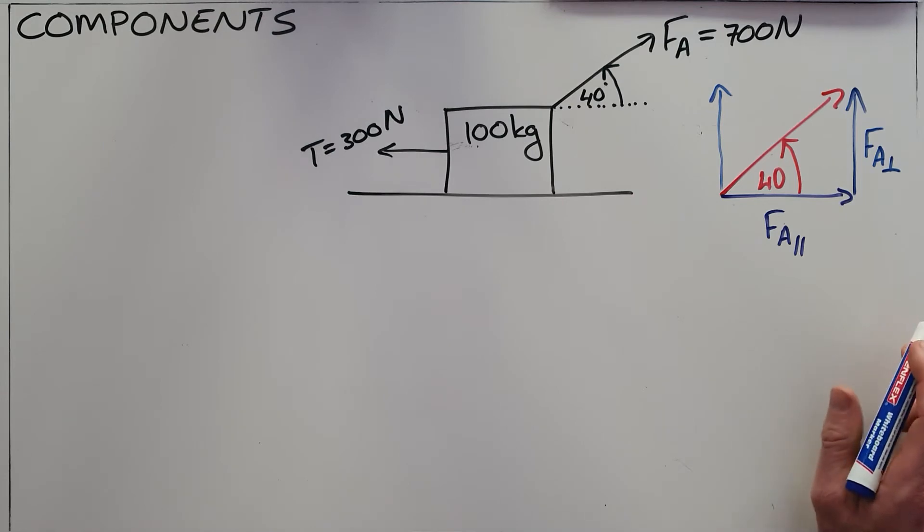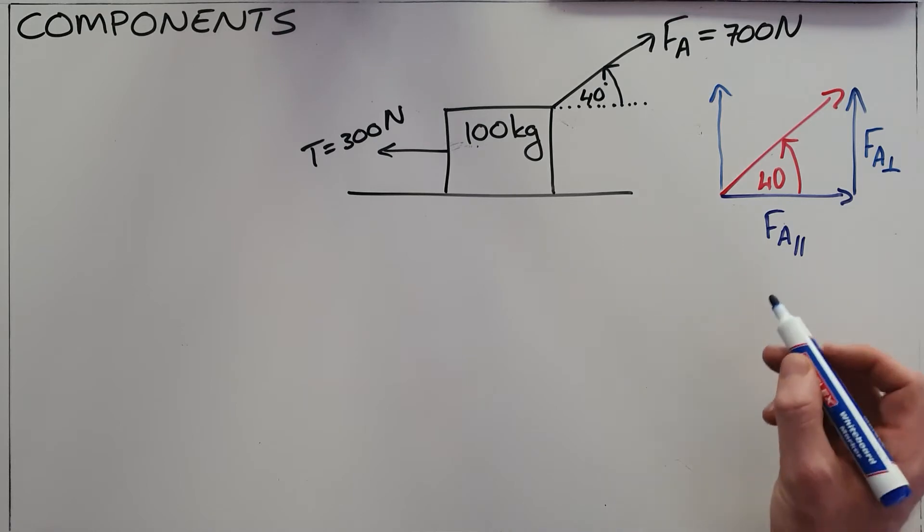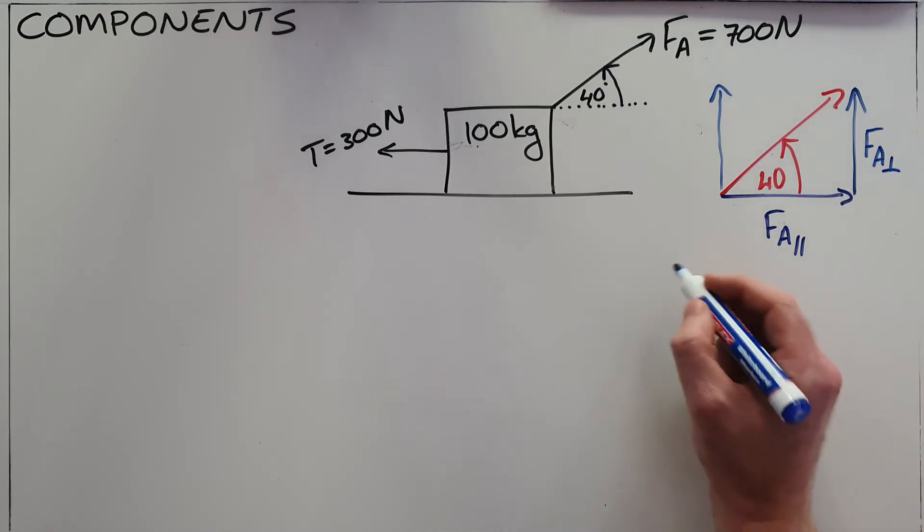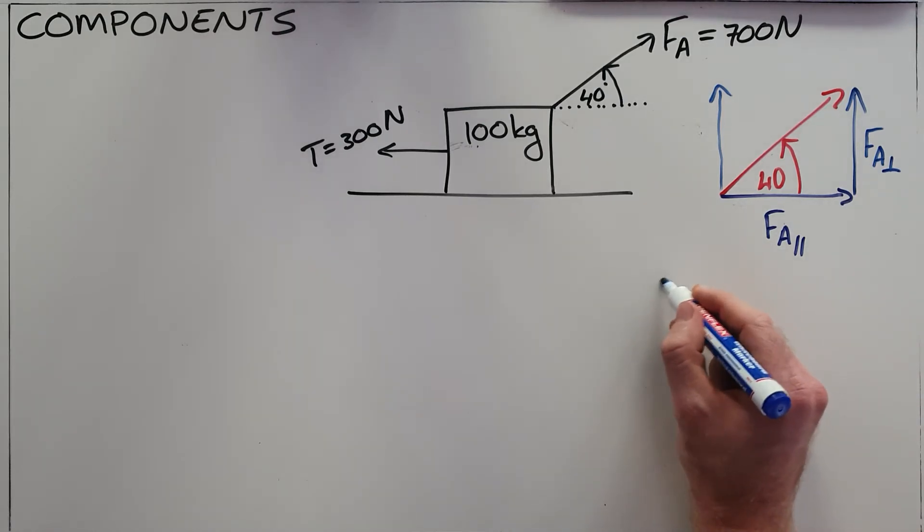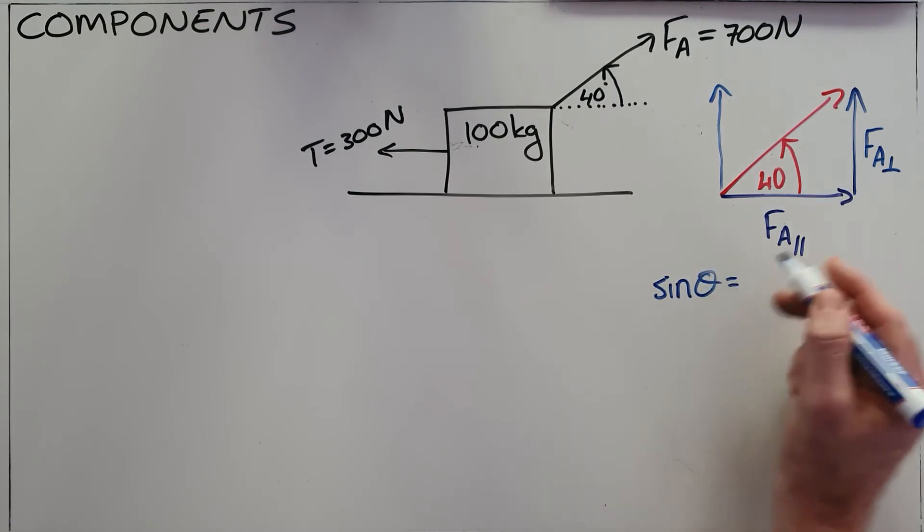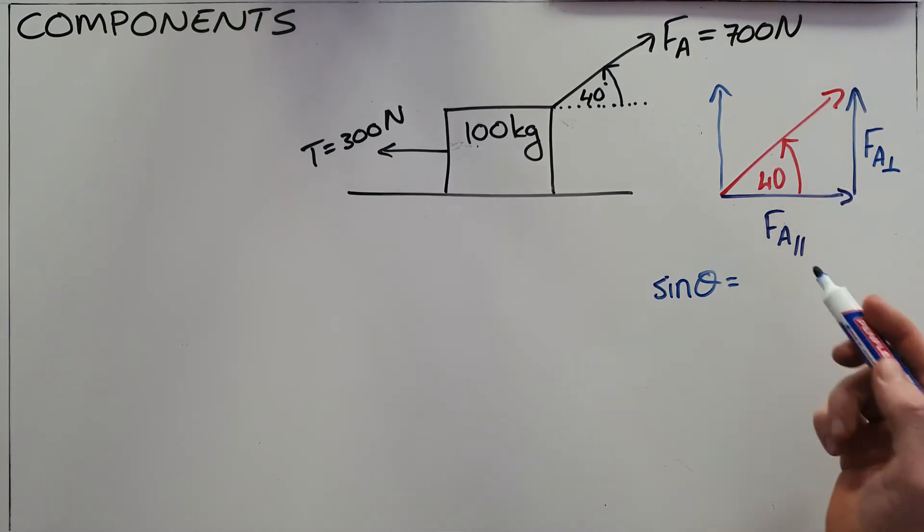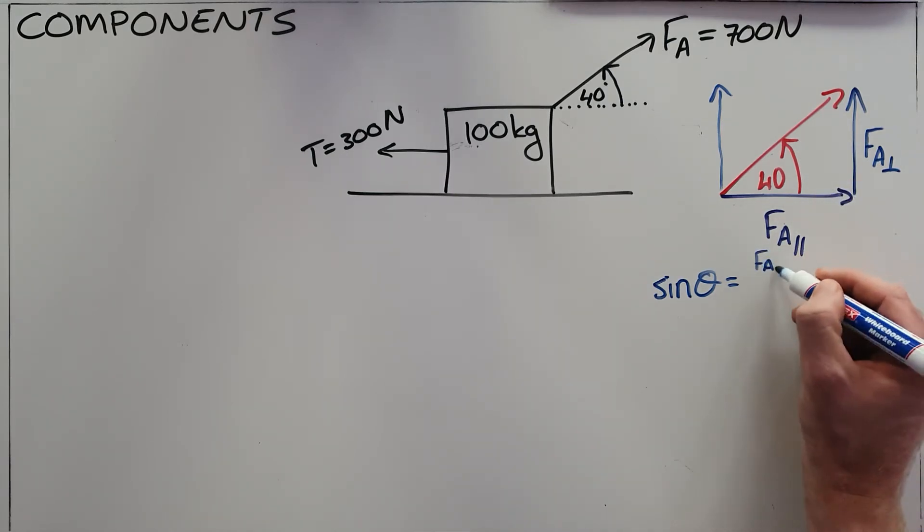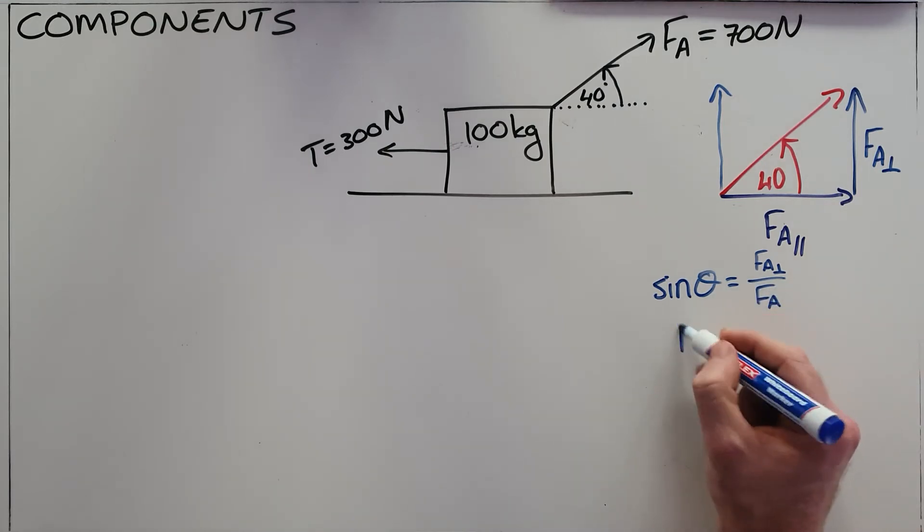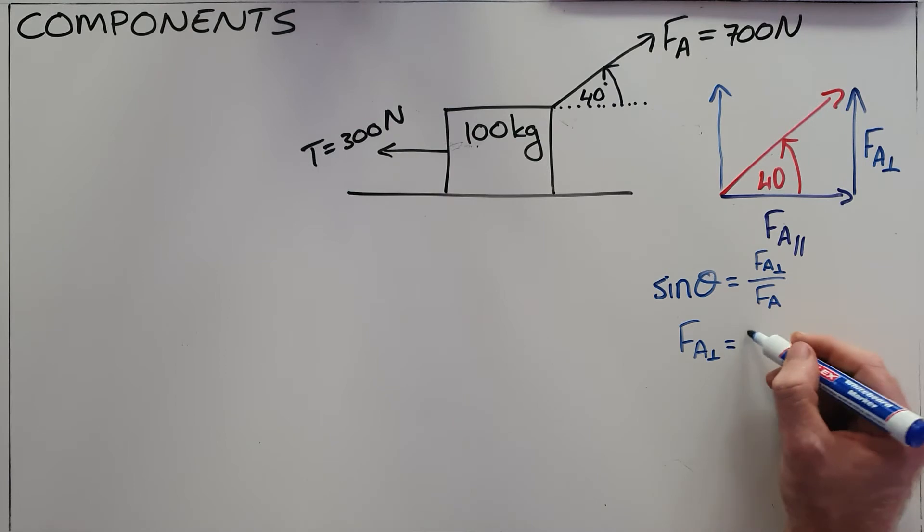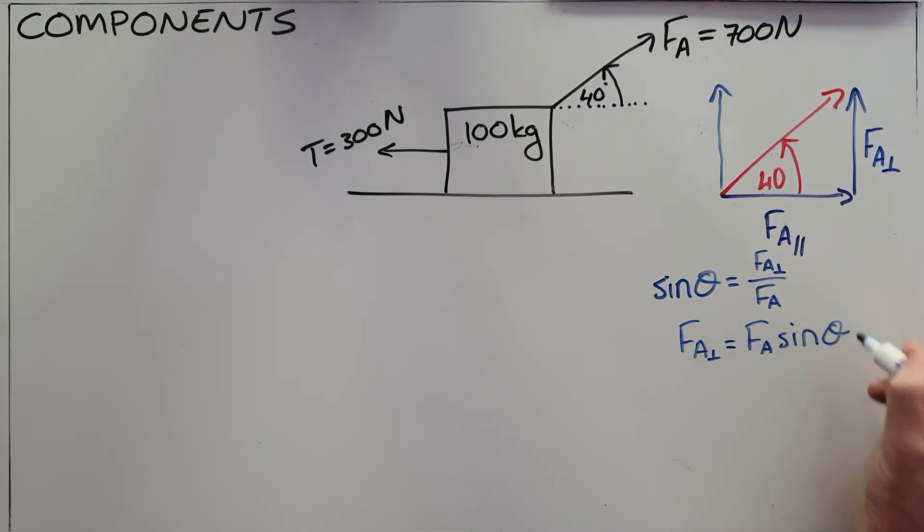Either way, the result is the same. We can now use trigonometry to find the values for those respective forces, and we can say that since we know that sine of theta is equal to the opposite side of the triangle over the hypotenuse, in this case that is F_A perpendicular over F_A, which can be rewritten as F_A perpendicular is equal to F_A sine of theta. We can then substitute those values that we have here.